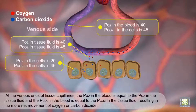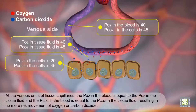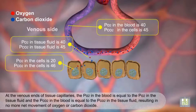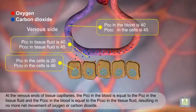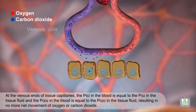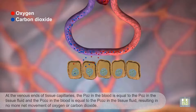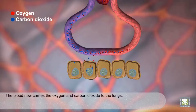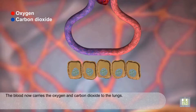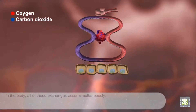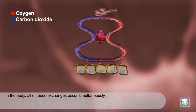At the venous ends of tissue capillaries, the PO2 in the blood is equal to the PO2 in the tissue fluid, and the PCO2 in the blood is equal to the PCO2 in the tissue fluid, resulting in no more net movement of oxygen or carbon dioxide. The blood now carries the oxygen and carbon dioxide to the lungs. In the body, all of these exchanges occur simultaneously.